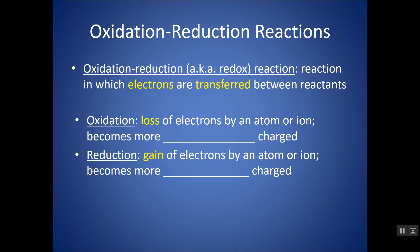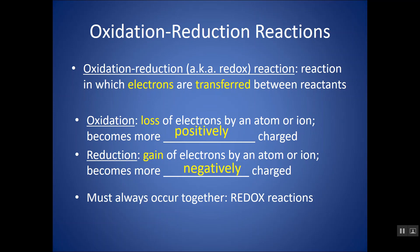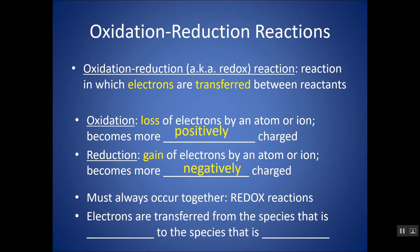Oxidation refers to the loss of electrons. When something is losing electrons, its oxidation number is going to go up or become more positive. Reduction is the gain of electrons, where the oxidation number is going to become lower or more negative. These always have to occur together, and that's why we use the abbreviation redox.